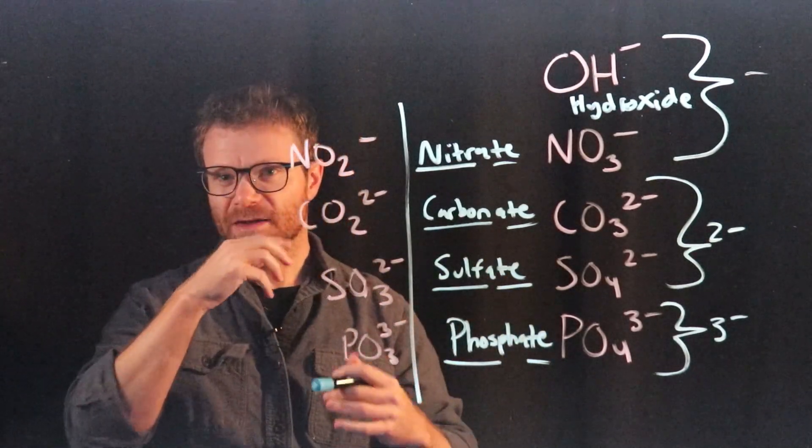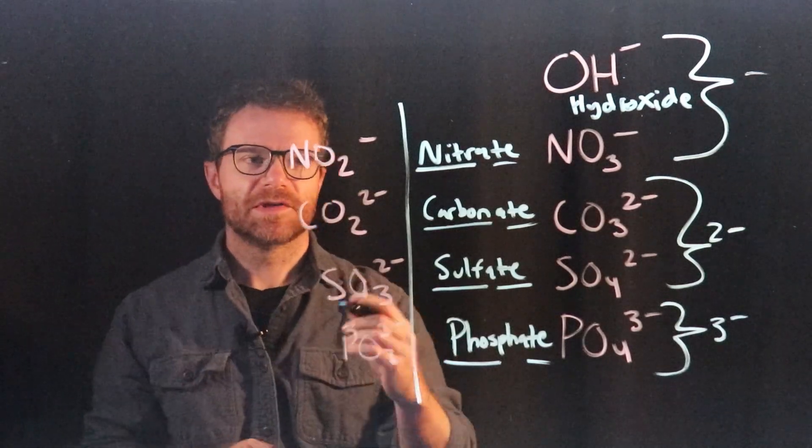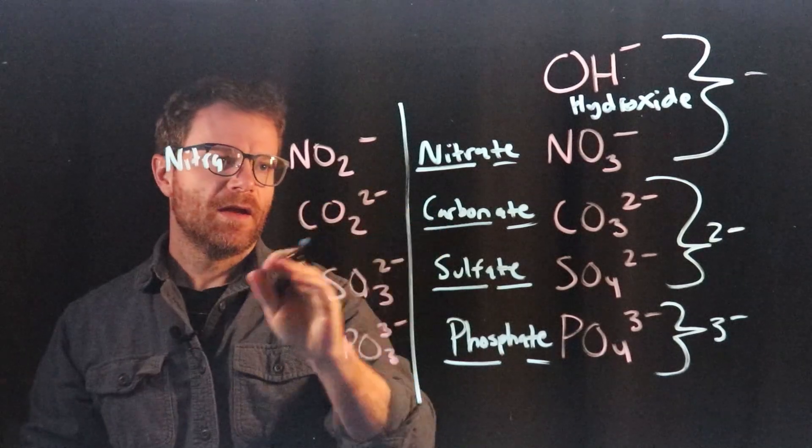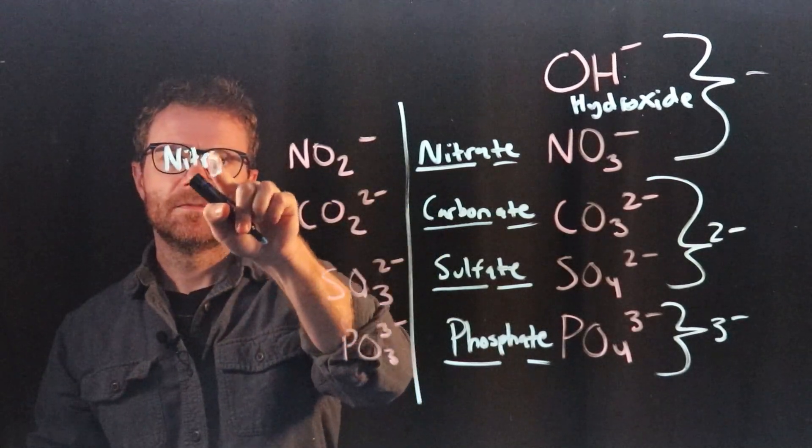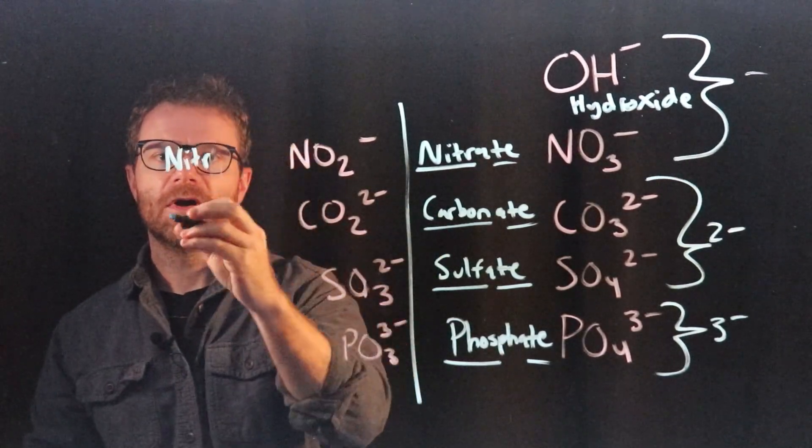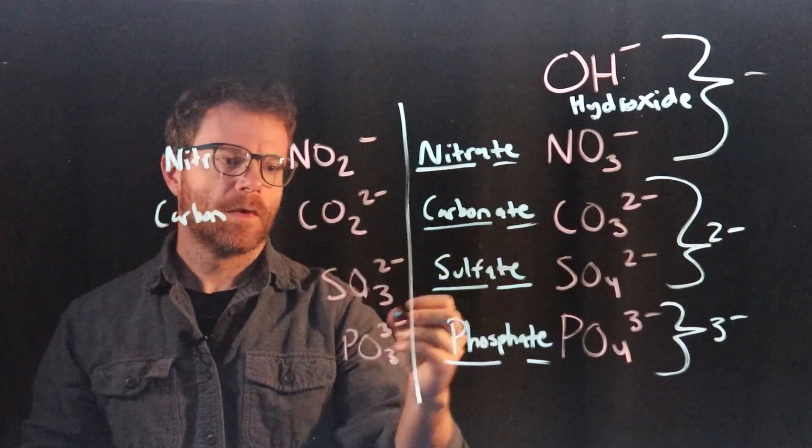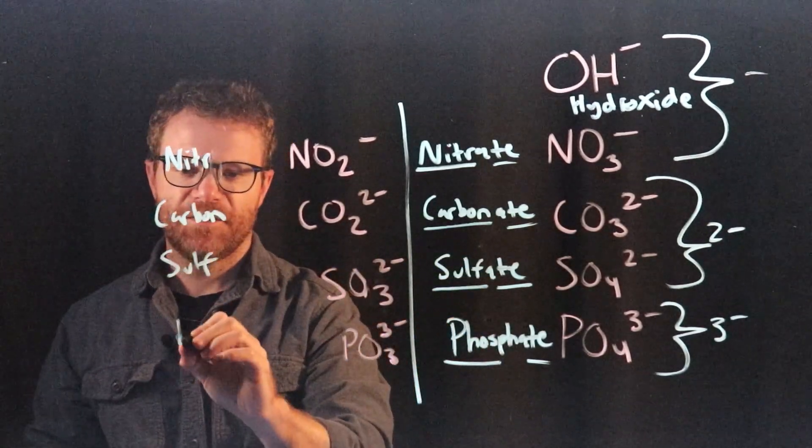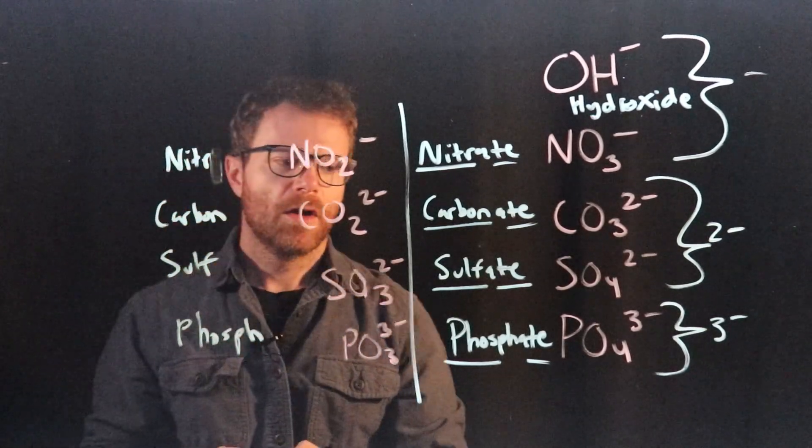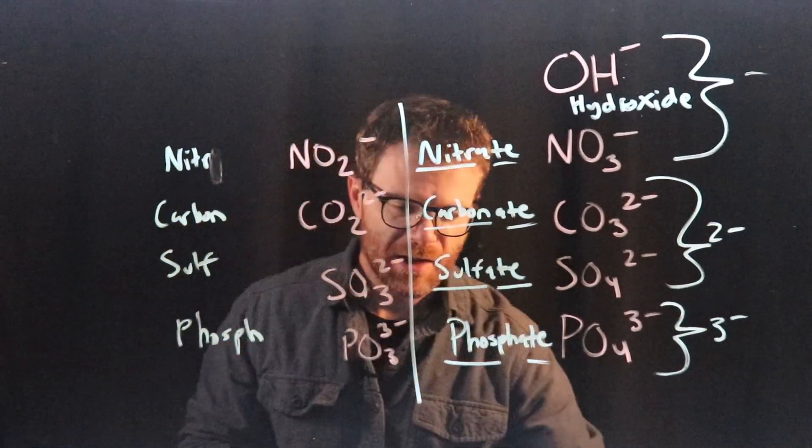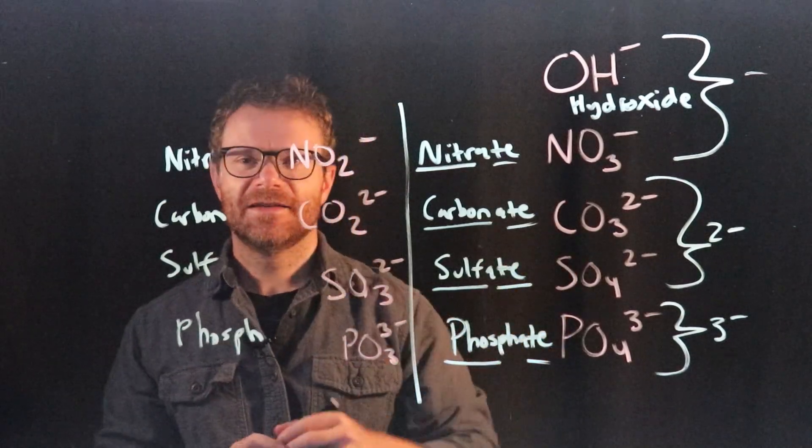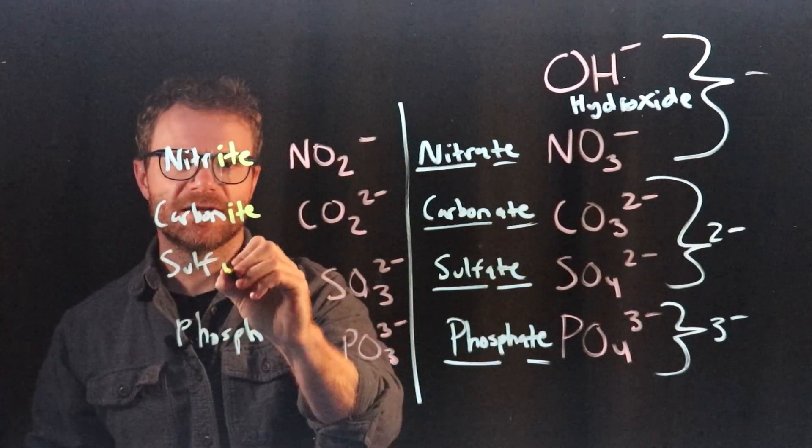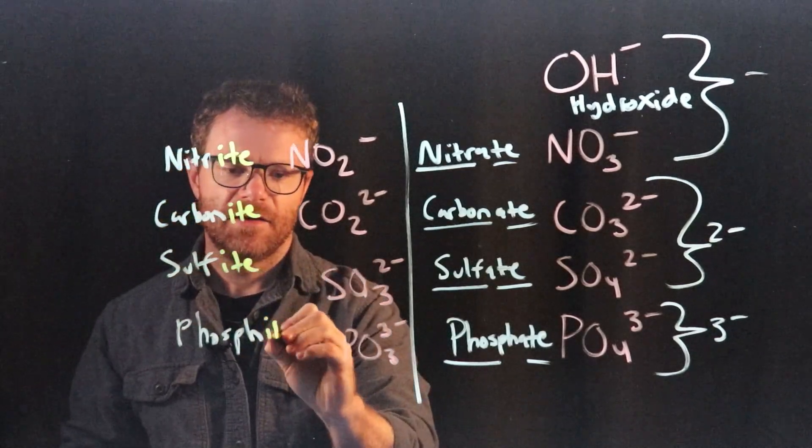And we name these in a very similar manner. So we start with the same way we did last time. Nit, carbon, sulf, and phosph. What's different now is we no longer use that -ate suffix. We now use -ite. Nitrite, carbonite, sulfite, and phosphite.